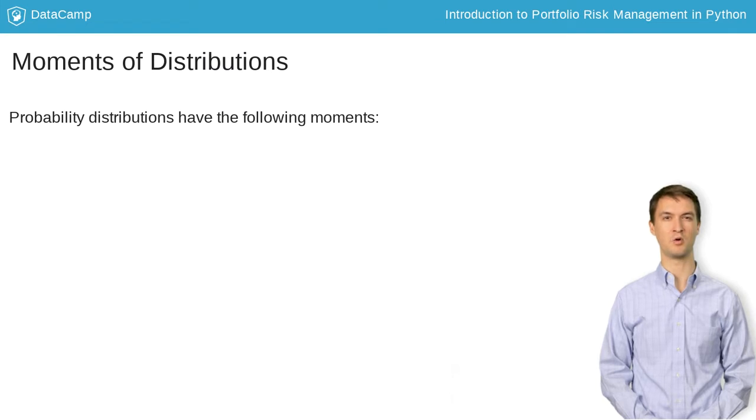The first moment is the mean, or mu, which is essentially the average outcome of a random sample of the distribution.